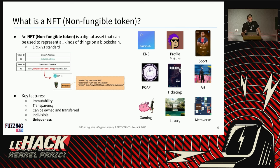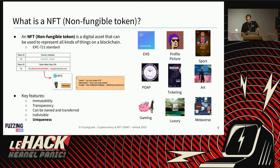An NFT, a non-fungible token, is more than just a PNG. It's essentially a line in a table on a smart contract saying that your address is the owner of this unique object, with a bunch of associated metadata. That metadata might be a profile picture, a ticket to Monaco, a luxury item, or a sword in a decentralized video game. There are many types and usages.